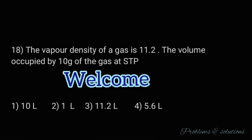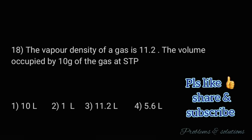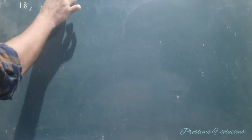States of matter, gas laws, question 18. The vapor density of a gas is 11.2. The volume occupied by 10 grams of the gas at STP is... Here are the given options. In this question, vapor density of the gas is given as 11.2.